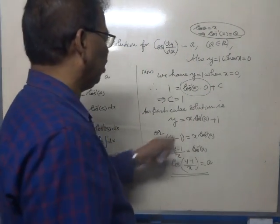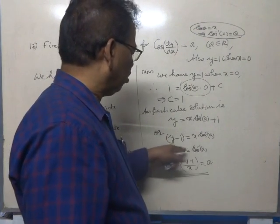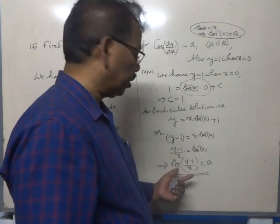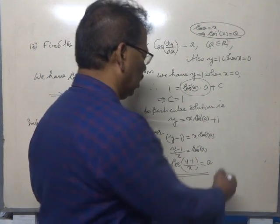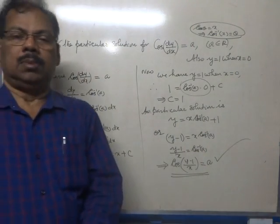Or, it can be written as y minus 1 is equal to x cos inverse a, or (y minus 1)/x will be cos inverse a. That means, cosine of (y minus 1)/x will be equal to a.